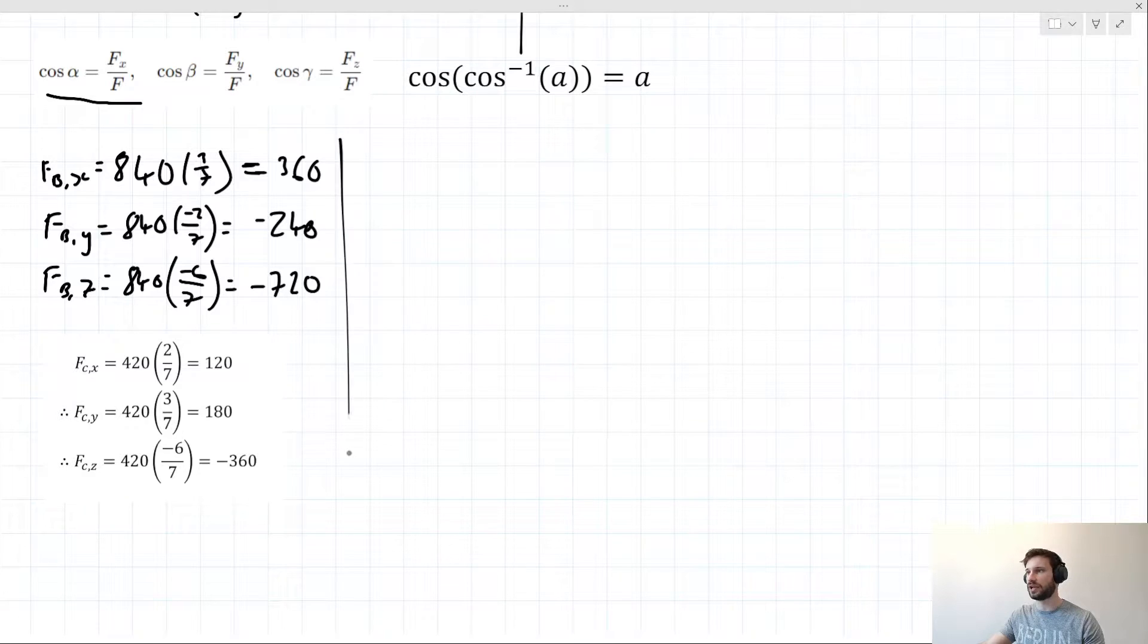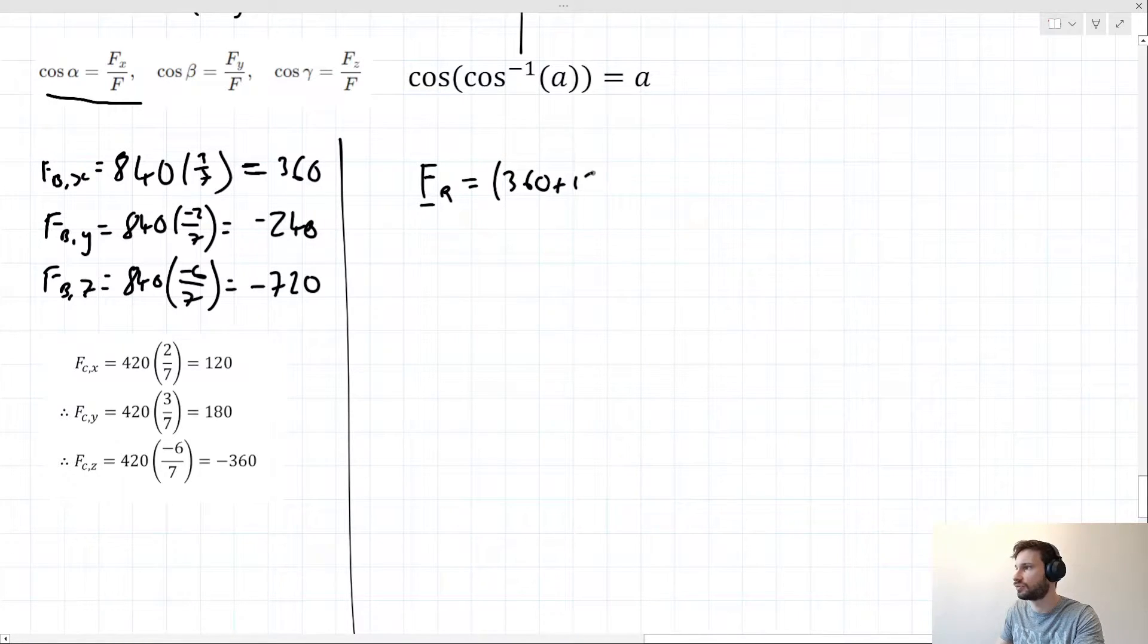All we need to do now is add them together respectively. Let's call it FR. Our resultant force takes a vector value of (360 plus 120)i plus (-240 plus 180)j